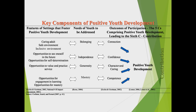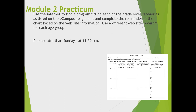Let's take a look at your assignments this week and see how intentionality plays a part. Module 2 Practicum: use the internet to find a program fitting each of the grade level categories listed below, as listed in the eCampus assignment, and complete the remainder of the chart based on the website information. Use a different website or program for each age group. The chart on the right portion of the slide is the same as the link on eCampus.